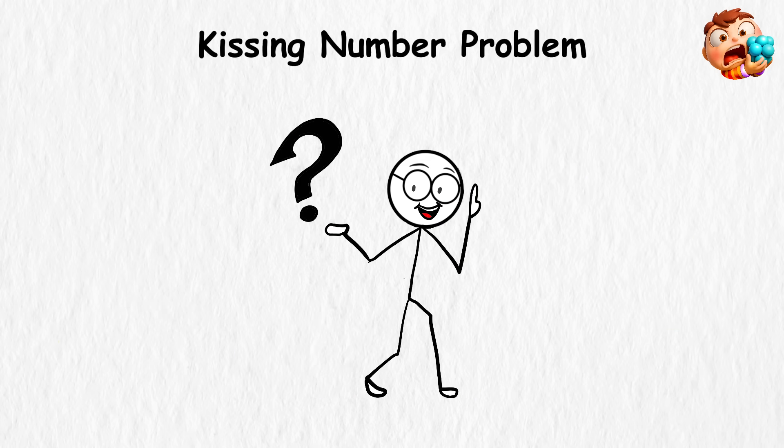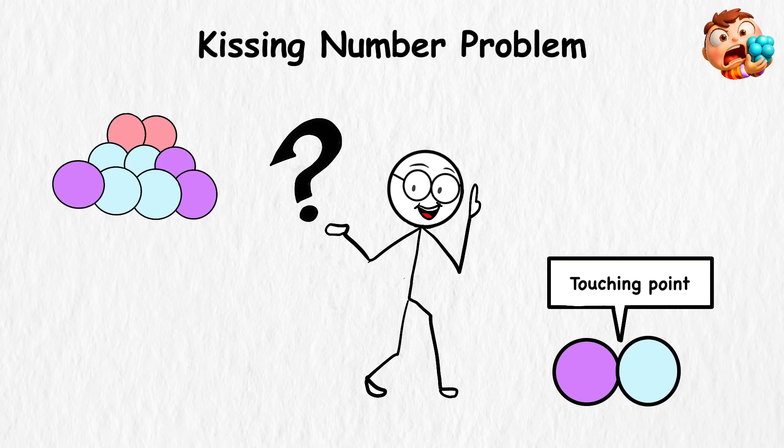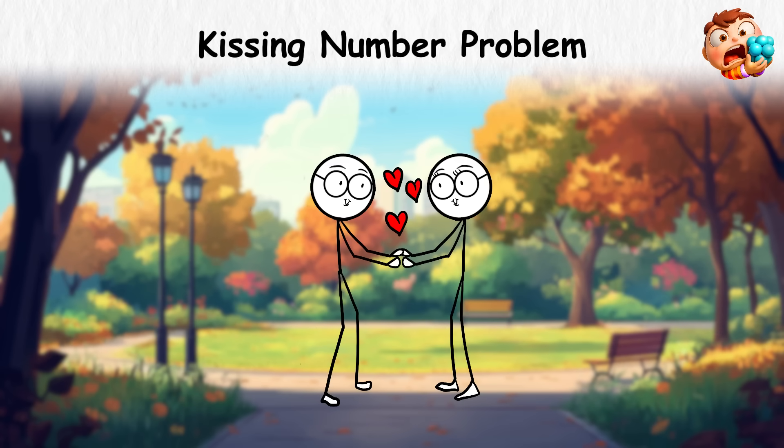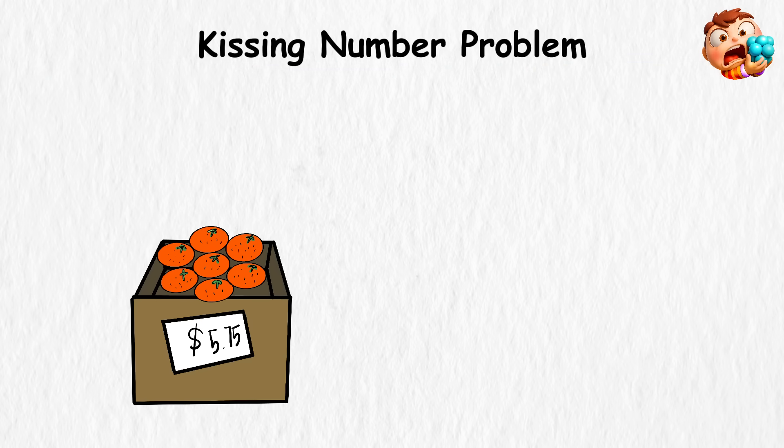But then comes the big question. How many spheres can touch one single sphere at the same time? That number is called the kissing number. Not because the spheres are romantic, but because they're all pressed up against each other like fruit in a supermarket bin.